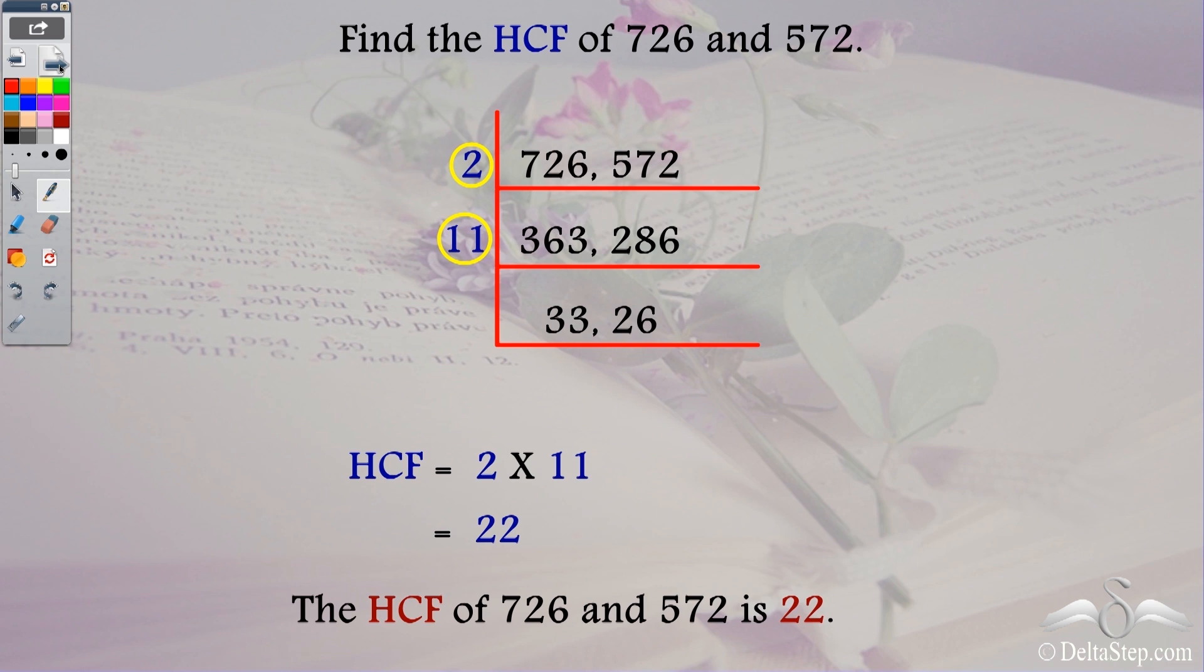So you need to check for the prime factors which divide the two numbers. Over here I see that there are numbers which are not prime. See 33 is not a prime number nor is 26. These are not prime numbers but still I stop here.